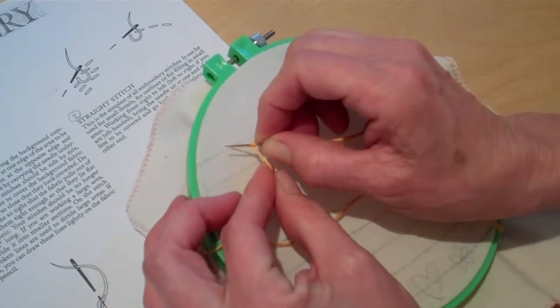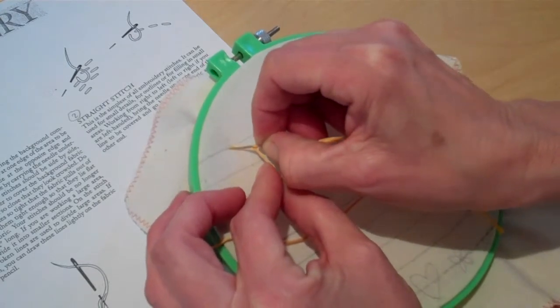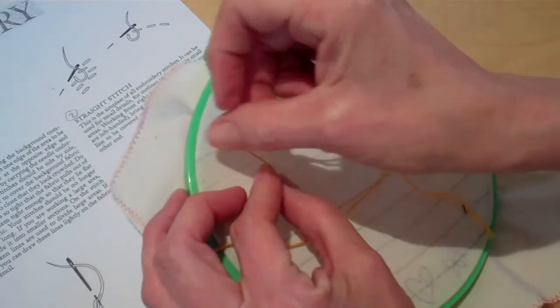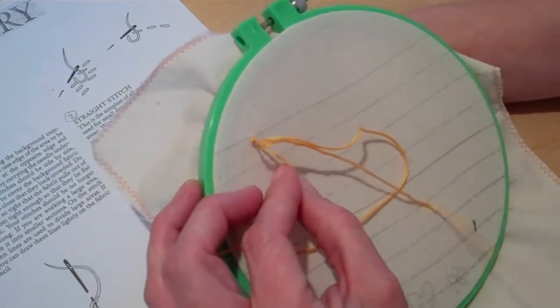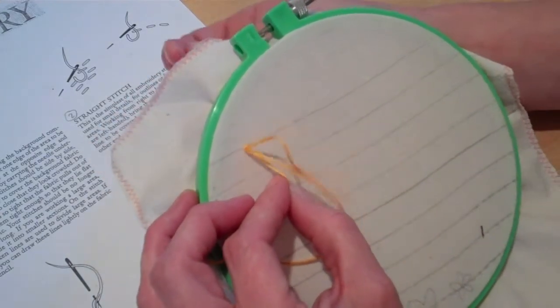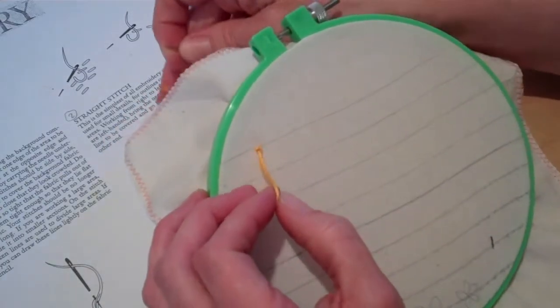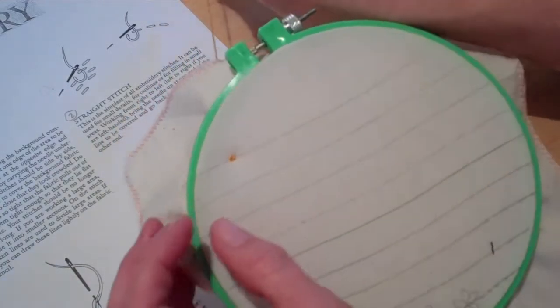Now this is the part where you need three hands. Then you bring the needle back right next to where you came up. Do not let go of the tail. Hold on to that tail. Then you pull, pull, pull, pull, slide. And there's your French knot.